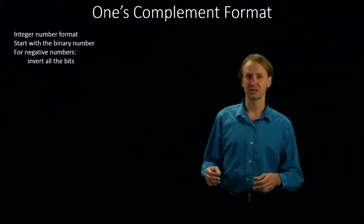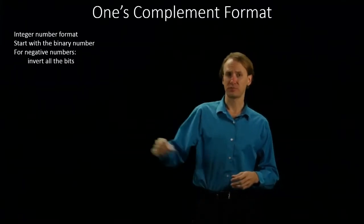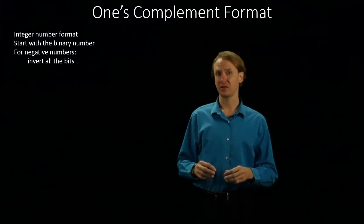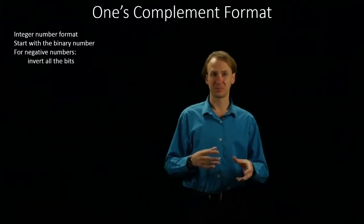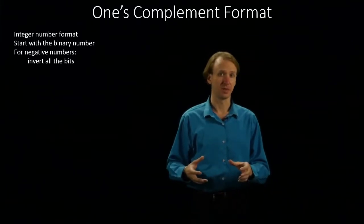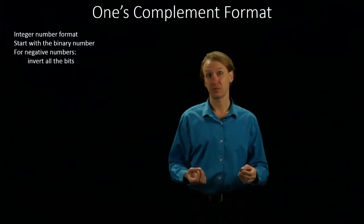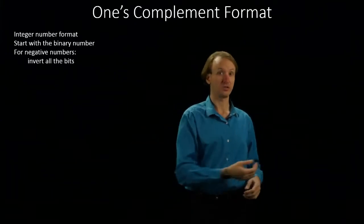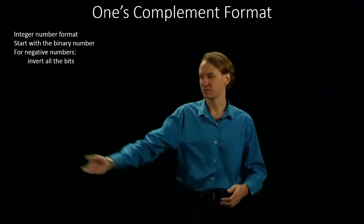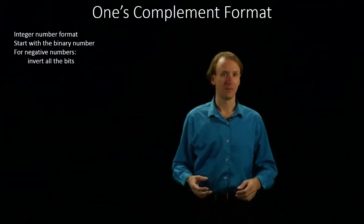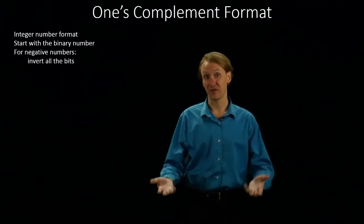In this case, we'll still use our leftmost bit as a sign bit effectively, but we're not going to explicitly set it as such. Instead, if we've got a positive number, we'll just write down that number as we'd expect. It will have lots of zeros on the left-hand side because those don't actually change the value of my number.